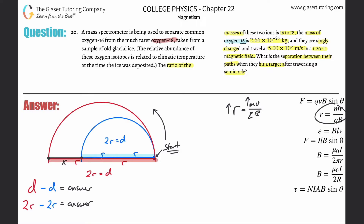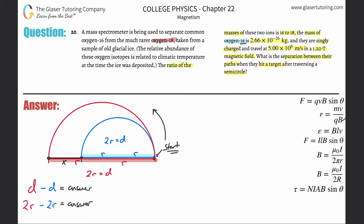So if I can solve for the radius of curvature for the red charged particle — oxygen-18 — and then do that for the blue one as well, I can find my answer. We're going to use the radius formula. Let's start with oxygen-16 since they gave us its data.